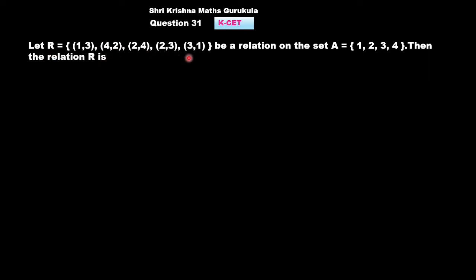Let R equal the ordered pairs (1,3), (4,2), (2,4), (2,3), and (3,1).